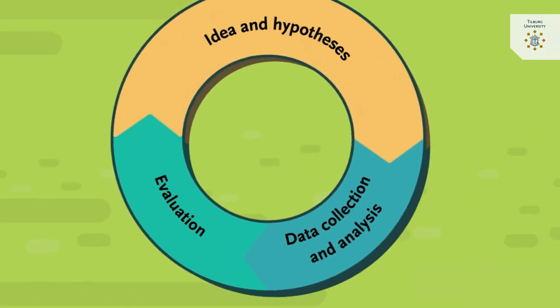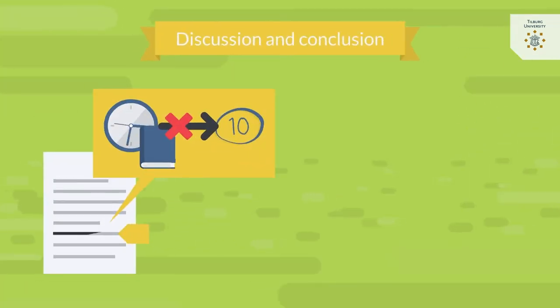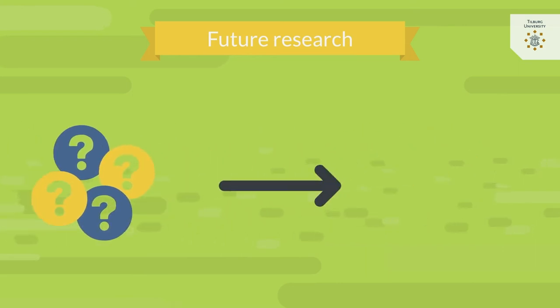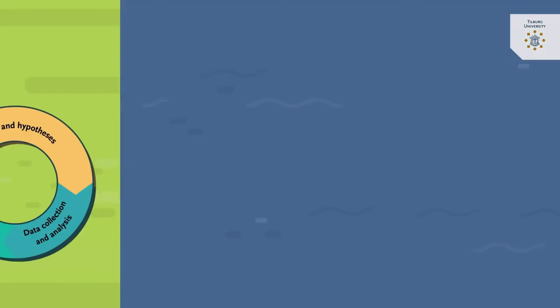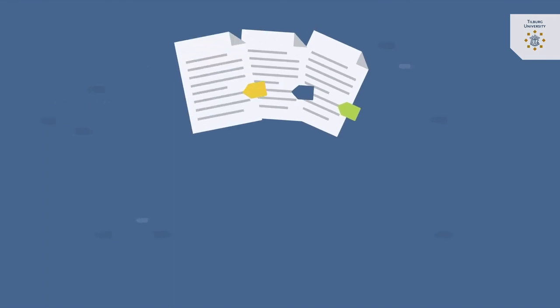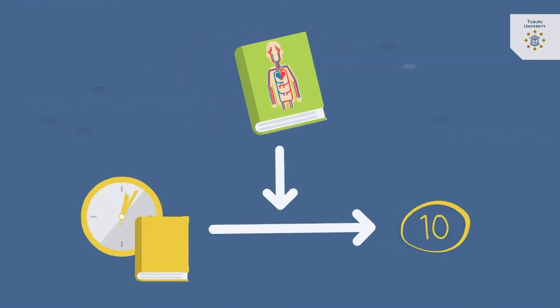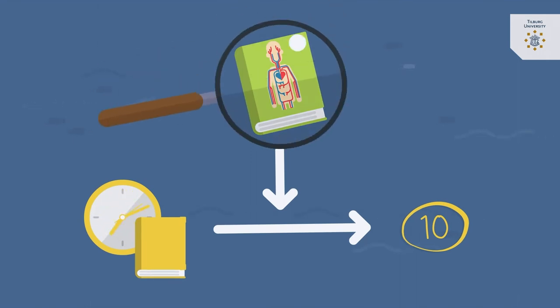Finally you enter the last step of the empirical cycle and you evaluate the results in the discussion and conclusion section. This evaluation may lead to new or adjusted research questions which can be tested in a new empirical cycle. For example, you may look for additional literature to explain your results and find that it depends on the type of course, whether more hours of study can lead to a higher grade, and that future research should include the type of course when testing such a hypothesis.